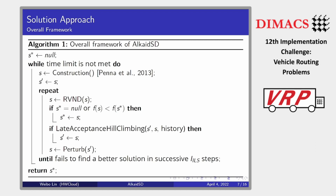Next, I will introduce the overall framework of our solver. It is a multi-start iterated local search algorithm. In each iteration, we use the insertion-based heuristic by Pena-Edo to construct a valid solution. Then, local search is performed using random variable neighborhood descent to further improve the initial solution. The late acceptance hill-climbing criterion is employed to determine whether the new solution should be accepted. Finally, the last accepted solution is perturbed utilizing the perturbation mechanism. I will introduce the neighborhood structures and the perturbation method in detail.